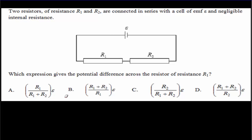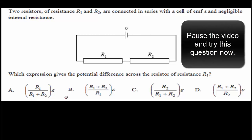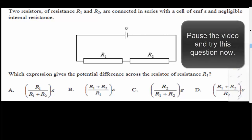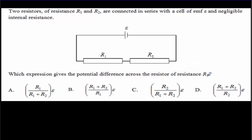Let's see if you remember that equation. Answer this IB multiple choice question. Pause the video, try the question, come back for the answer. The voltage across R1 is just R1 over the total resistance times the battery voltage.